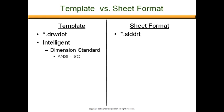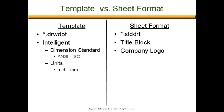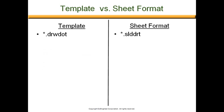I'm going to write 'Intelligent' under the template side because it can hold many things such as dimensioning standard — for example, are we in ANSI or ISO — and what units are we in, whether inches or millimeters. The sheet format can remember things like the title block, company logo, and notes on the sheet or in the title block.